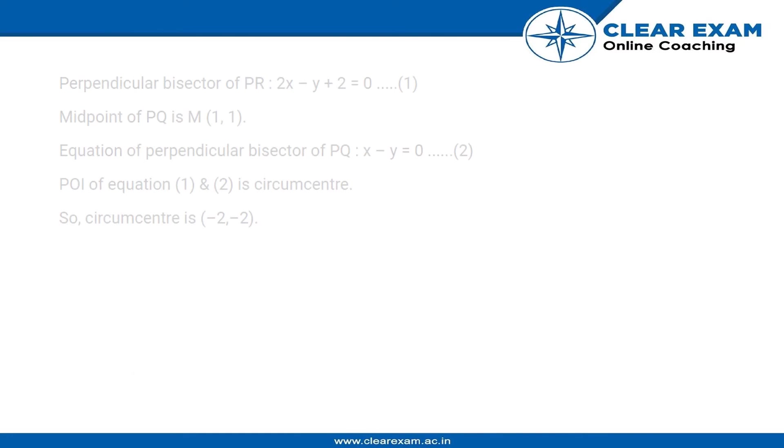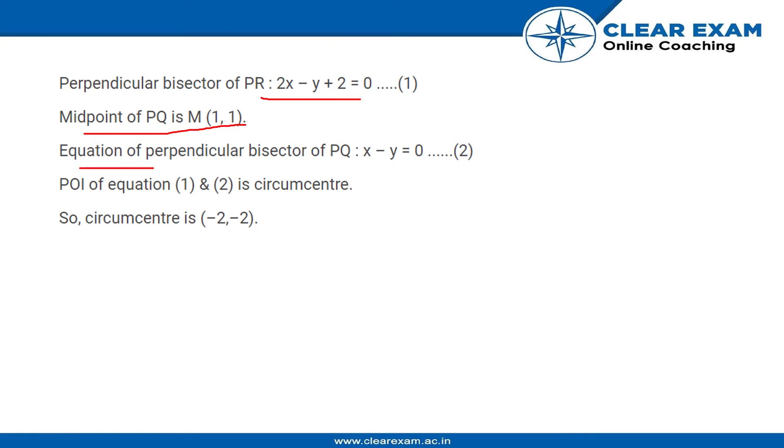So what we are going to do is use the perpendicular bisector equation given. We know the midpoint of PQ is (1, 1) and the equation of perpendicular bisector of PQ is x - y = 0.